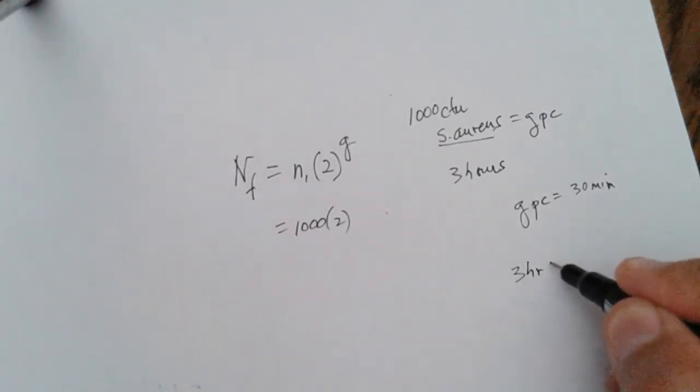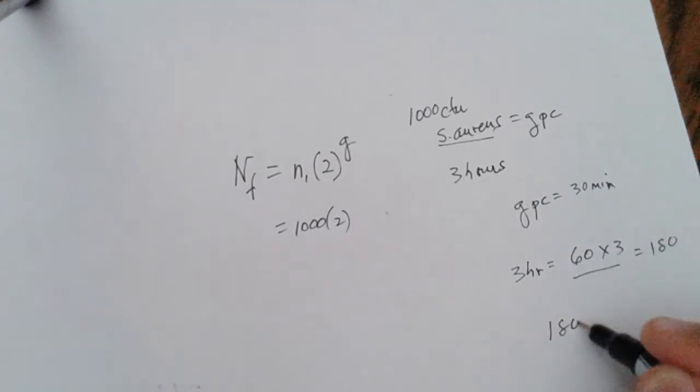And then we need to figure out how many generations are in three hours. So if we think about that, 3 hours is equal to 60 minutes times 3, which is equal to 180 minutes. So 180 minutes, divide that by 30, and we get 6.